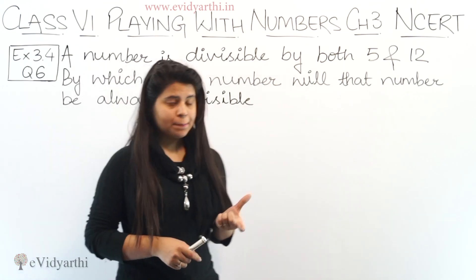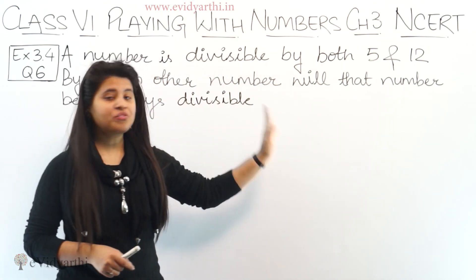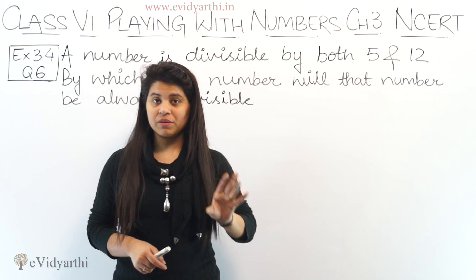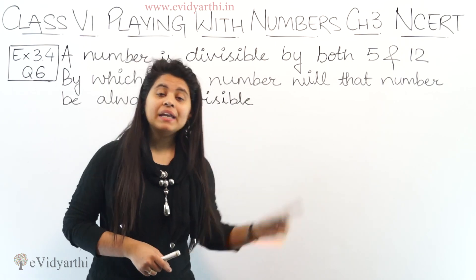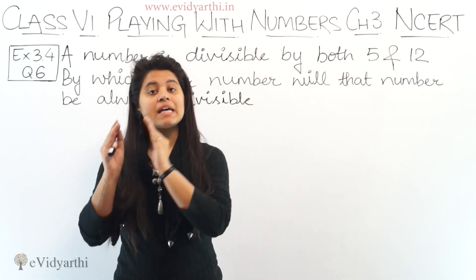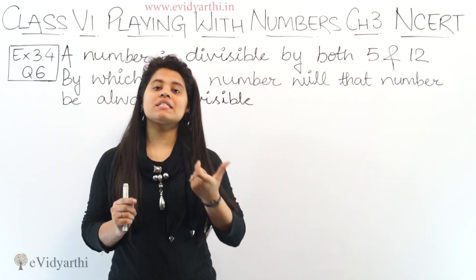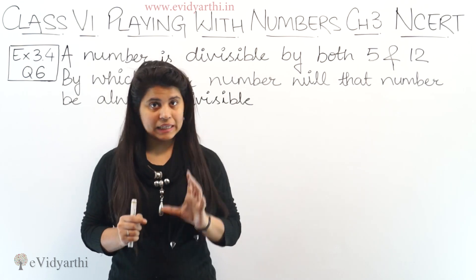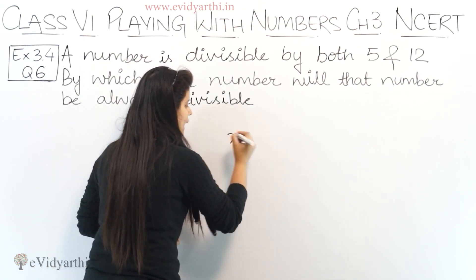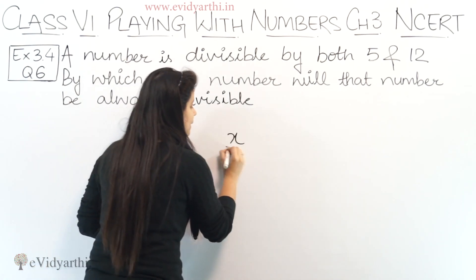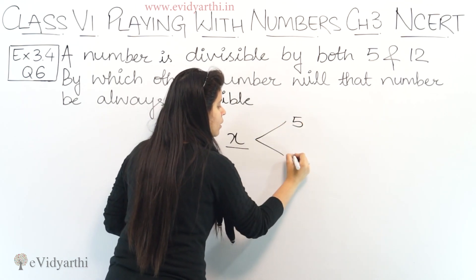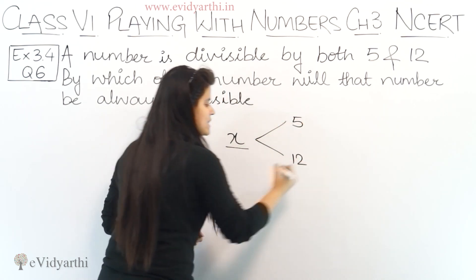You have a number and you are told that it is divisible by 5 and 12. The question is: which other number will it be divisible by? Let's suppose the number is x. x is given to be divisible by both 5 and 12.